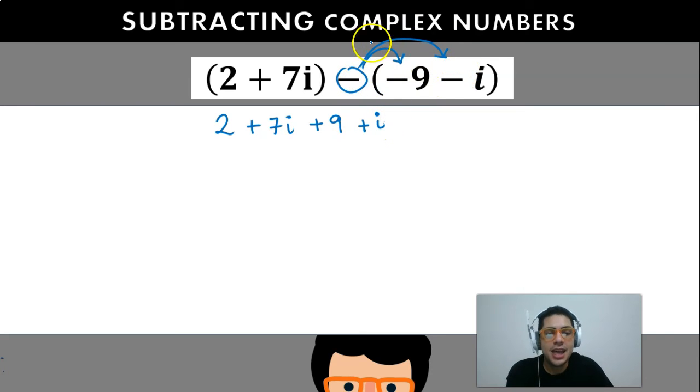Now we just add like terms. So 2 and 9, they're both added, so that's 2 plus 9 is 11. And 7i plus i is going to be 8i. And that is pretty much it for today guys.